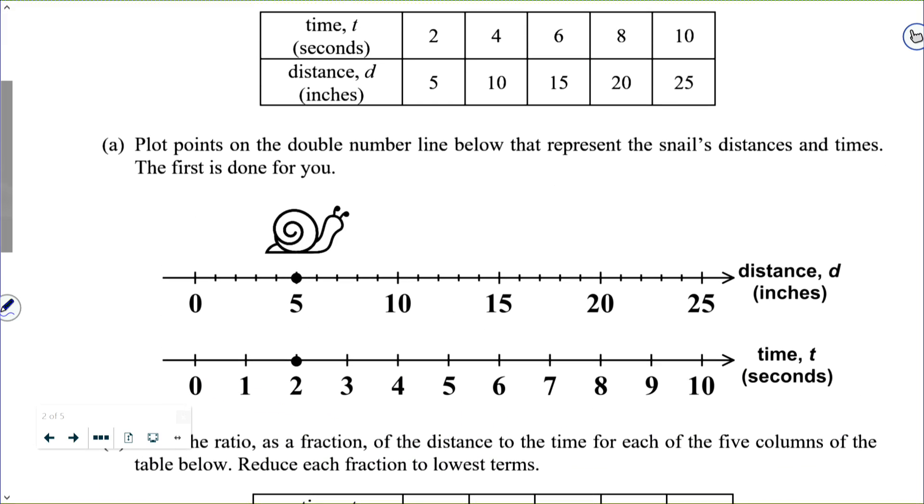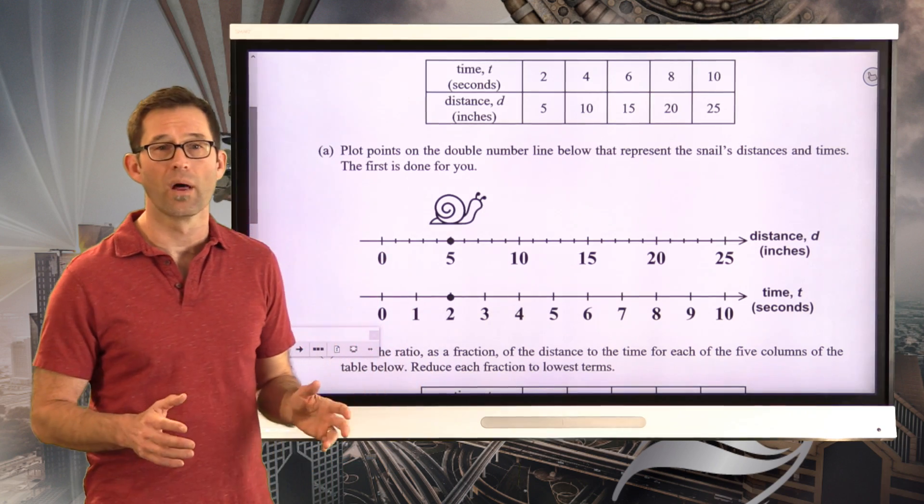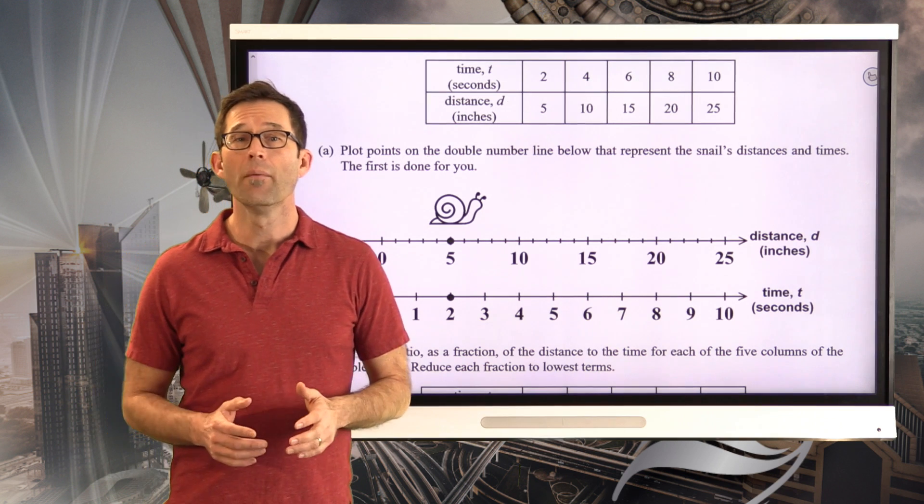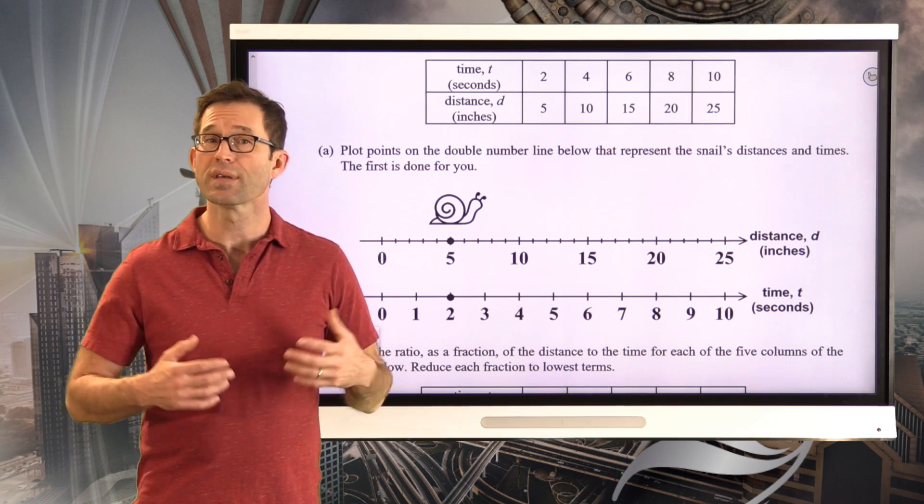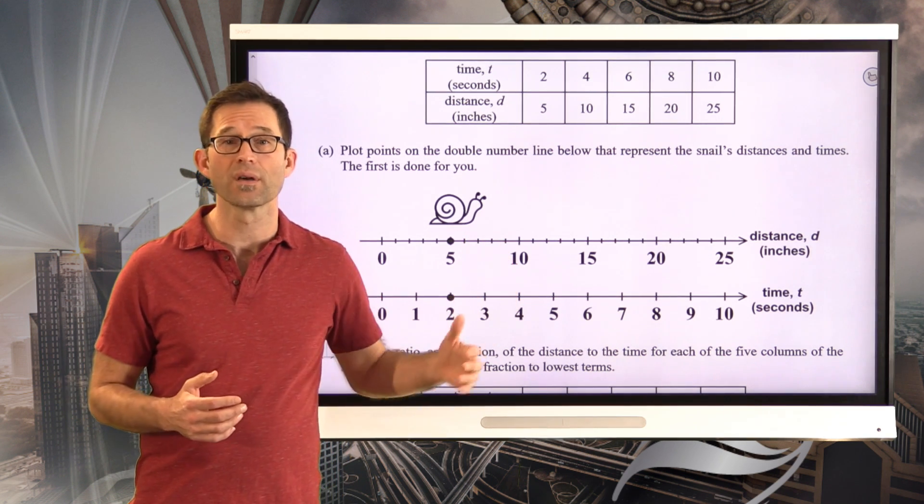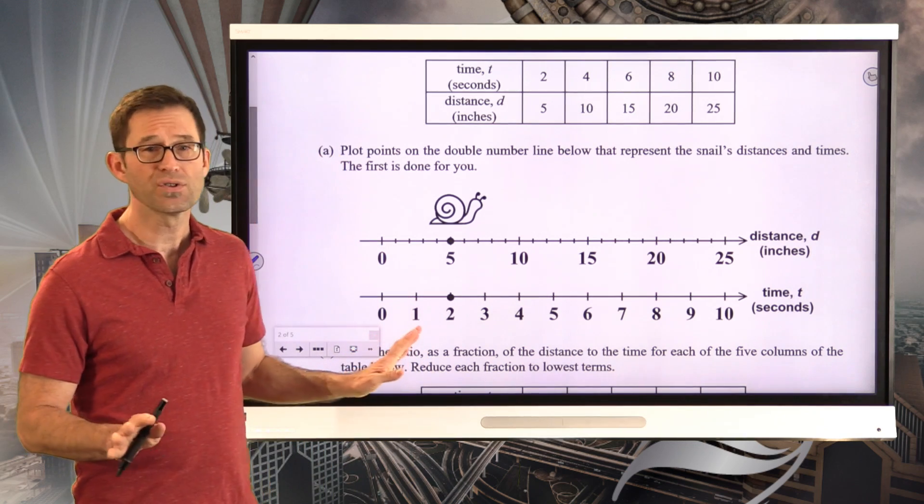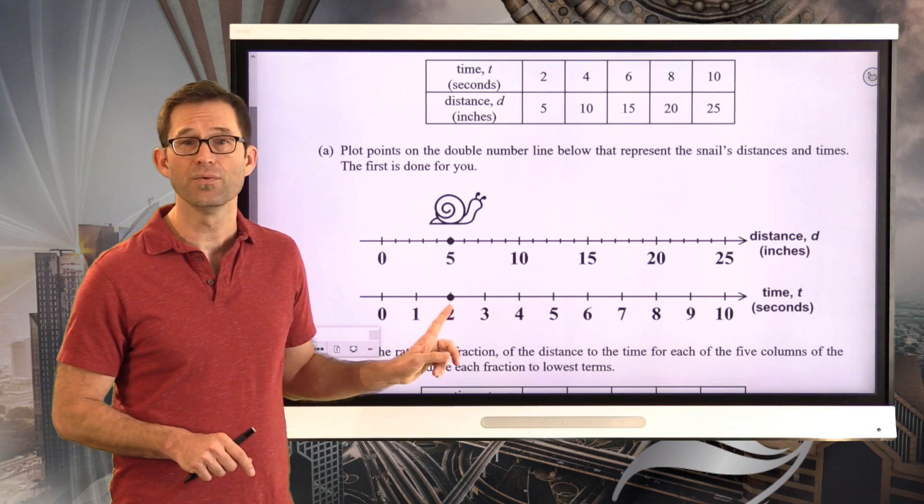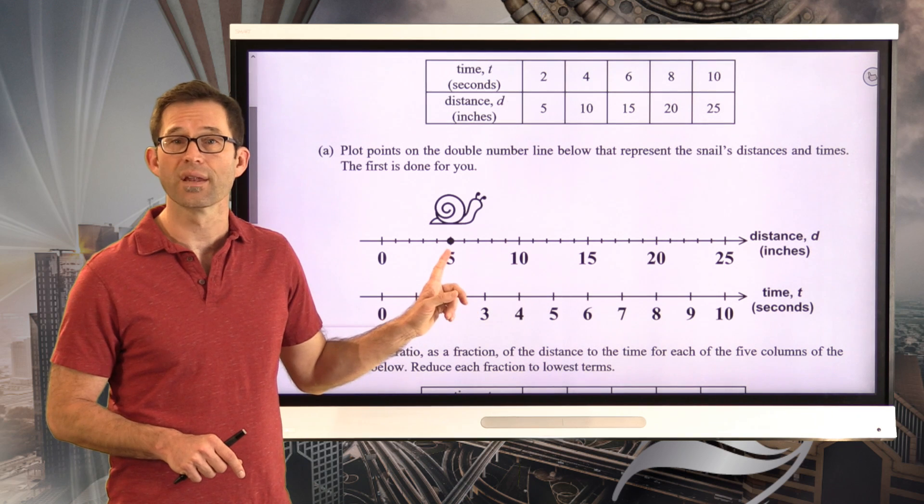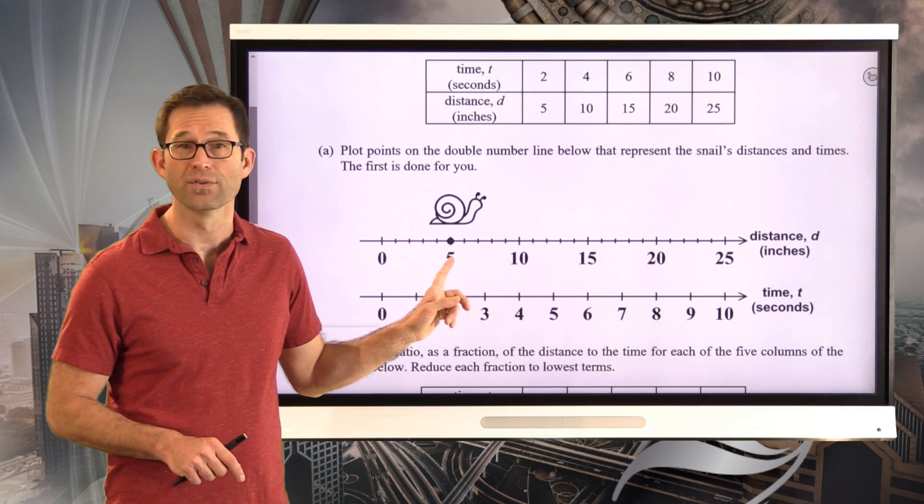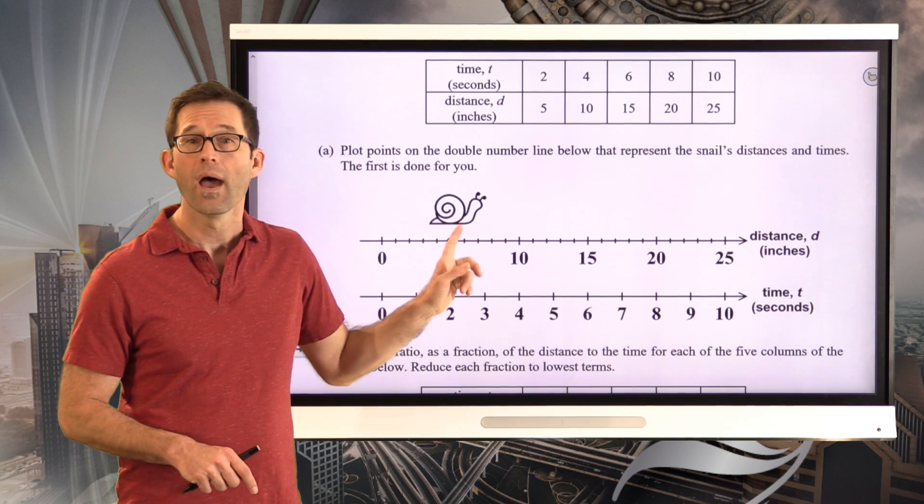So you've worked a little bit before with double number lines with ratios, and what this is going to illustrate is how these two variables, distance and time, end up being proportional. And let's take a look at why. Just double number line, all this means is that two seconds, the snail has moved a distance of five inches. It's not moving very fast.